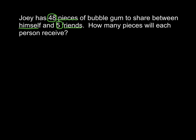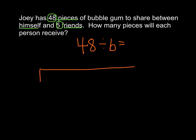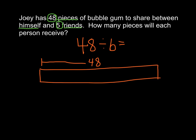The equation for this is 48 divided by 6 equals blank. To draw the strip diagram, I have a bar that represents 48 pieces. I show that the whole bar is 48, and then it's going to be divided into six parts: one, two, three, four, five, six.